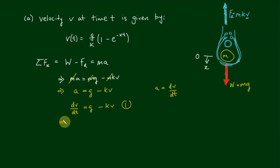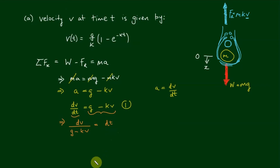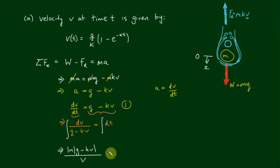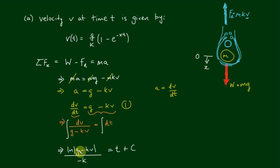We separate this by getting all the v terms on one side and all the t terms on the other. Moving the right-hand side downstairs and t upstairs, we can integrate both sides. The left-hand side integrates — applying the reverse chain rule — to the log of (g minus kv) over negative k. So multiplying through by negative k, we have log of (g minus kv) on the left-hand side.